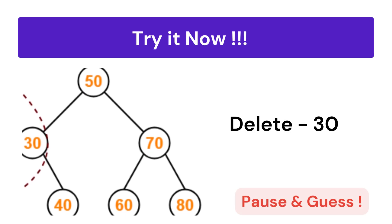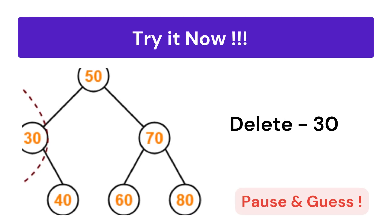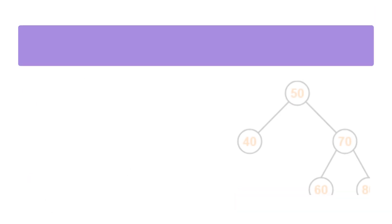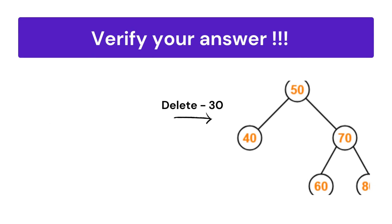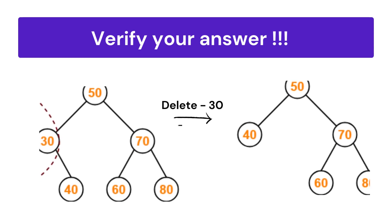Now pause the video and try to delete node 30. First, check if node 30 is present in the BST — yes, it is present. It has only one child node which is 40, so we replace 30 with 40 and delete it. After deletion, the BST looks like the result shown on the right-hand side.